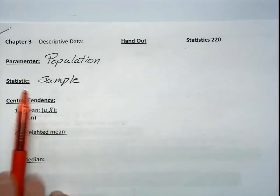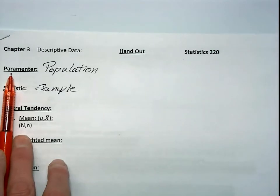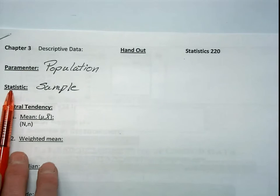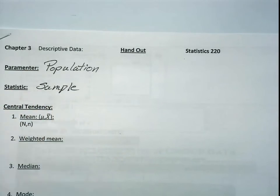Okay, remember, a little review: a parameter is calculated from a population, a statistic is calculated from a sample.